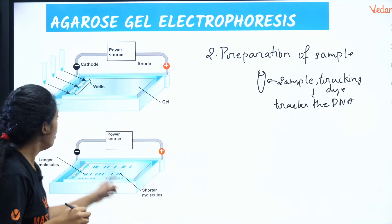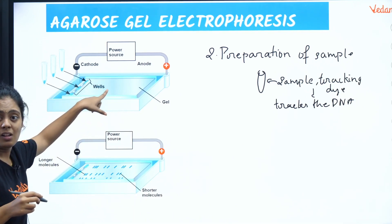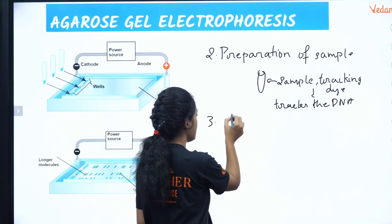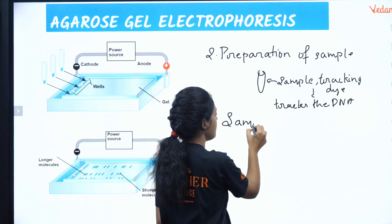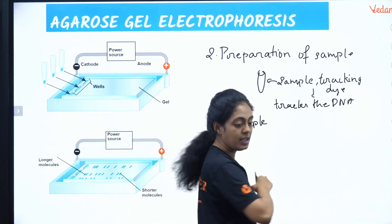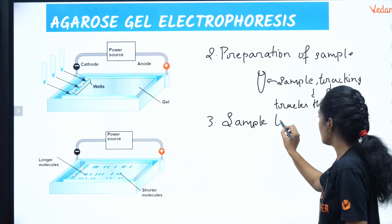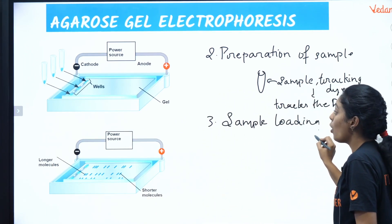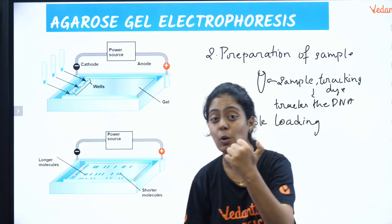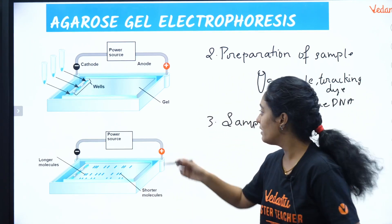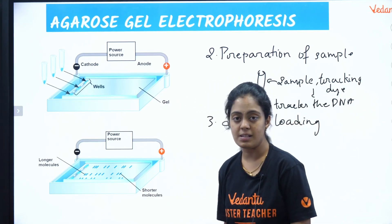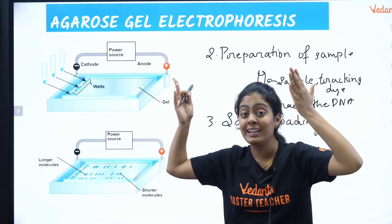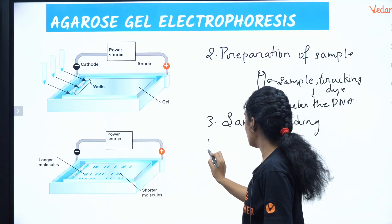The third step is loading of sample. I load the samples onto the wells using a micropipette. The sample is loaded into the wells of the gel placed in the electrophoretic chamber. That completes step three.